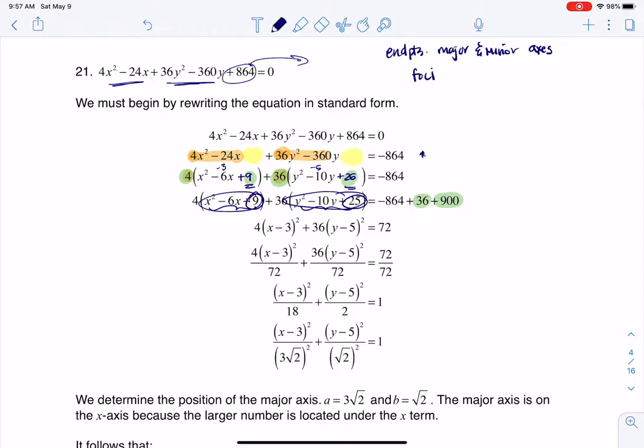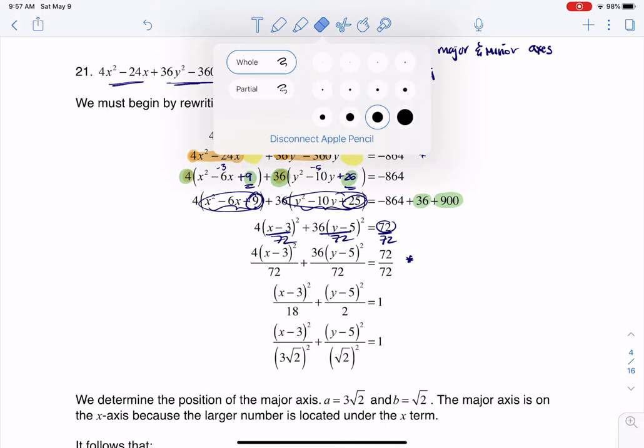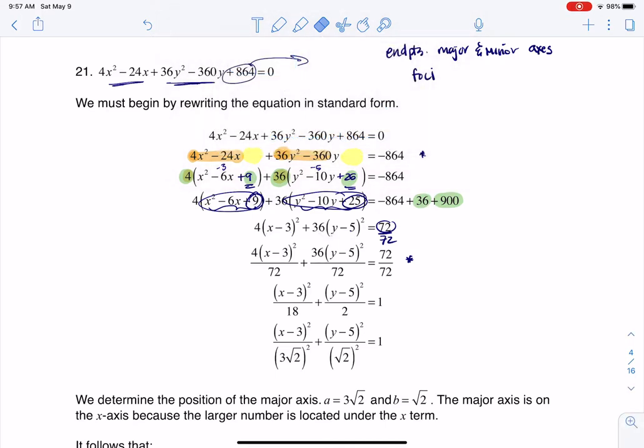So I'm going to divide everything by 72, and that's what you see me doing at this stage of the game. Let me erase this just so it's not all junked up here. Then I go ahead and I reduce these fractions: 4 over 72 becomes 1/18, 36 over 72 becomes 2, and 72 over 72 is 1. That's great.